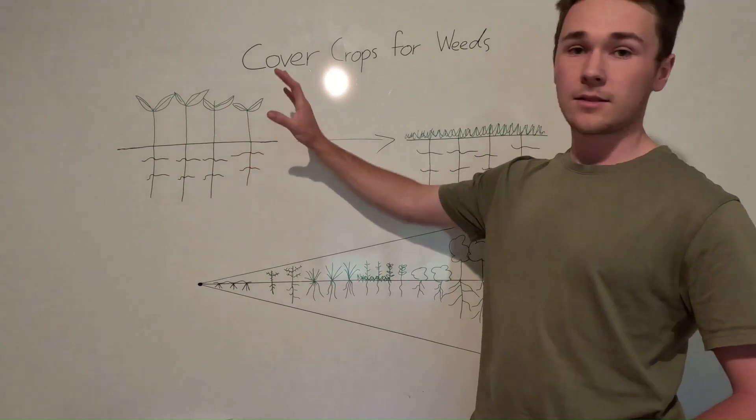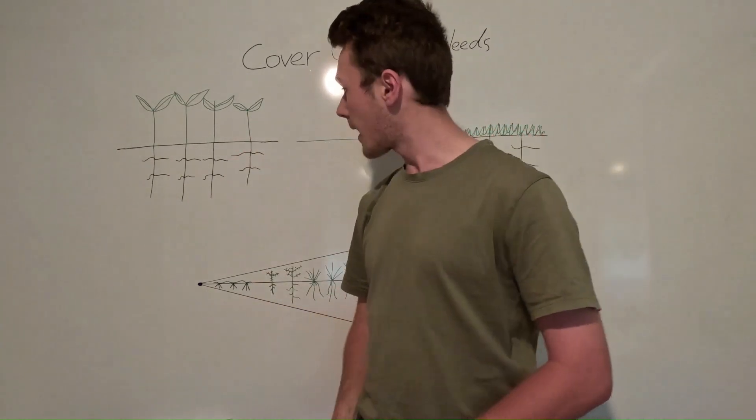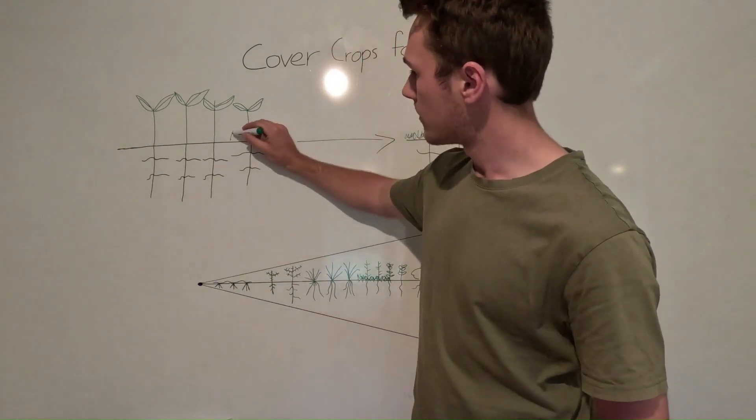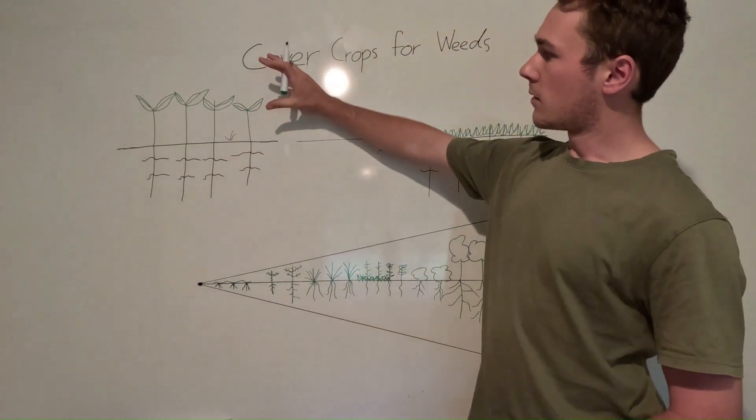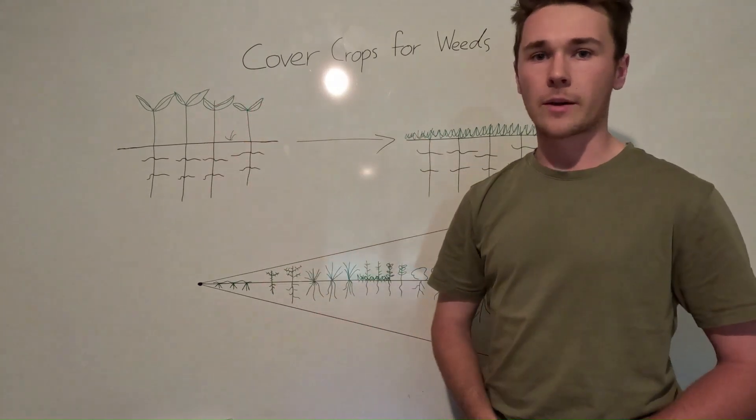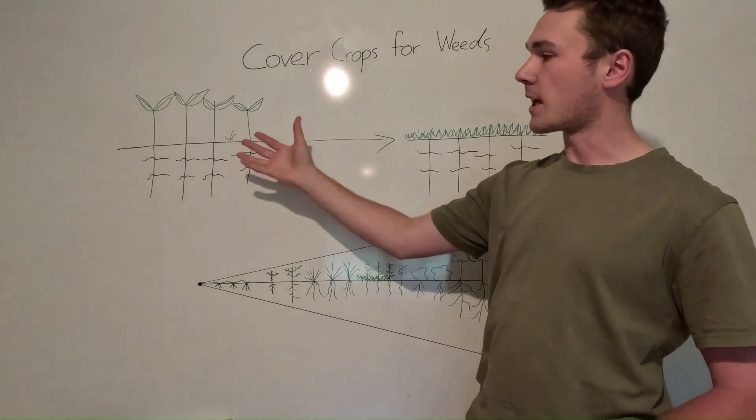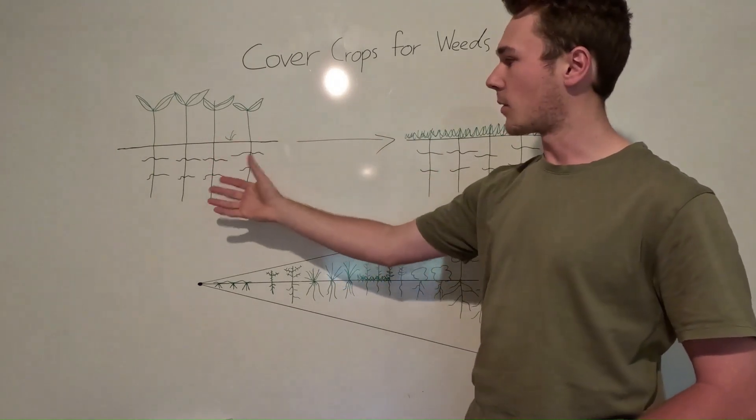So the first one is that they literally suppress weeds. While they're growing, if a weed pops up here, your cover crop will suppress whatever weed is growing there. They'll be blocking the sunlight, they won't be coming through. It will generally out-compete the weed.